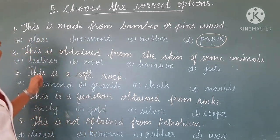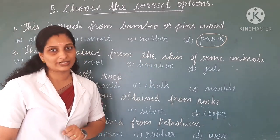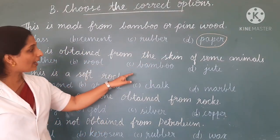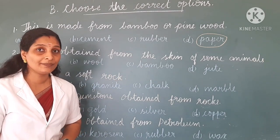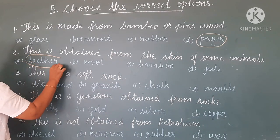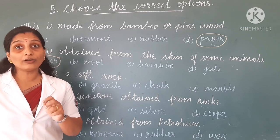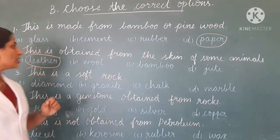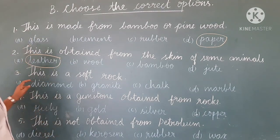Second question: this is obtained from the skin of some animals. Your options are leather, wool, bamboo and linen. Which is the correct option? Yes — leather. Wool is the fur of animals, not skin. So leather is the correct option.